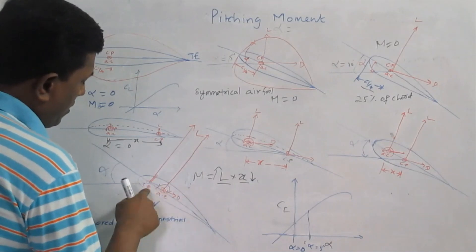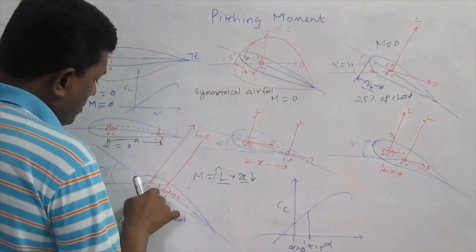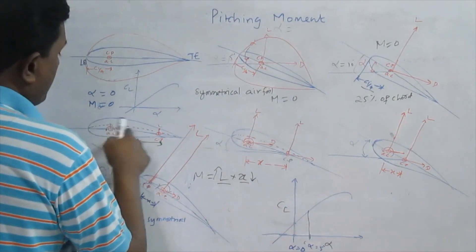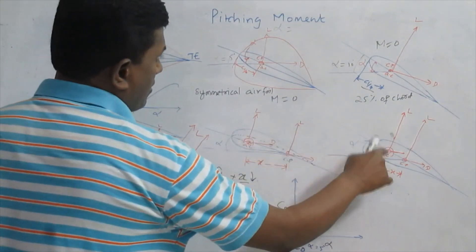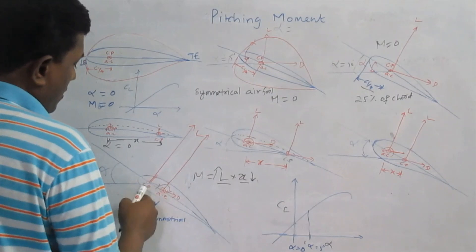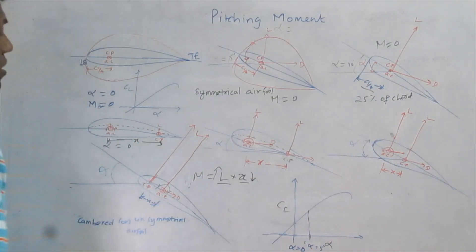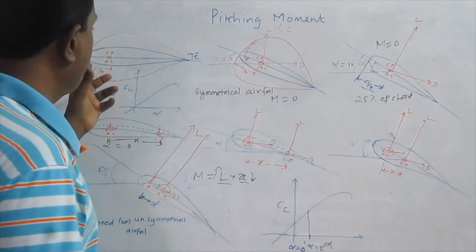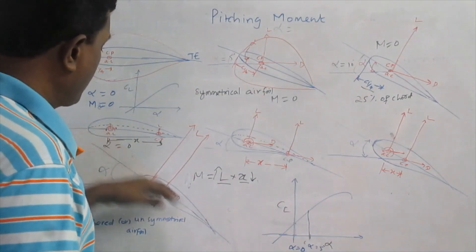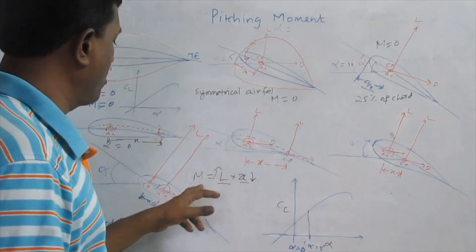As the center of pressure moves ahead of the aerodynamic center, this produces a clockwise pitching moment — what we call the nose-up pitching moment. In the earlier cases, we observed a counter-clockwise pitching moment acting at the aerodynamic center. But when the center of pressure is forward of the aerodynamic center, it produces a clockwise pitching moment, referred to as the nose-up pitching moment. This explains how the pitching moment is fixed at the aerodynamic center and how the center of pressure moves forward and backward along the chord of the aerofoil depending on the quantity of lift, which is responsible for producing the pitching moment.